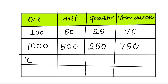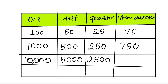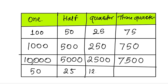If we take ten thousand — its half is five thousand, one-fourth is two thousand five hundred, three-quarter is seven thousand five hundred. If we take the number fifty — its half is twenty, quarter is twelve-five, and three-quarter is thirty-seven-five.